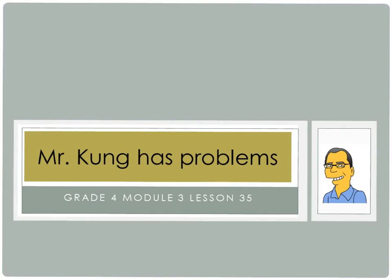Hello, and welcome to another episode of Mr. Kung Has Problems. Tonight we're working on Module 3, Lesson 35, and we're going to be multiplying two-digit multiples of 10 by other two-digit numbers, and we're going to be using the area model to solve those problems.